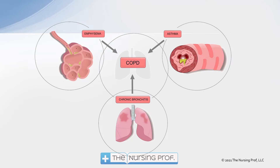Now let's talk about what COPD is. Technically, there are three different types of diseases that can cause airway obstruction. We have emphysema, which is the destruction of the lung tissue. We have asthma, which is a narrowing of the airways caused usually by an allergic response causing inflammation. And then we have chronic bronchitis, which is chronic mucus production and usually associated with emphysema. Emphysema and chronic bronchitis typically fit together as components of COPD.